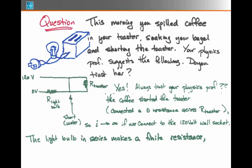So your physics professor's suggestion was to add another resistor in series with this whole thing. The light bulb in series makes a finite resistance. As a result, now the current will be the 120 volts divided by the resistance of the light bulb. And that, in principle, should be safe, that you'll get the same current you would normally get when you connect a light bulb to a wall socket.